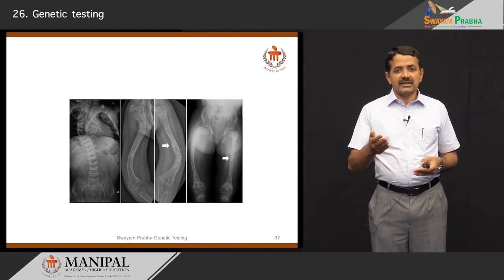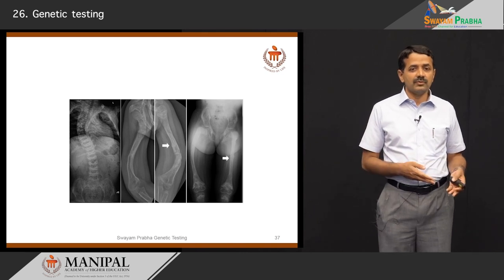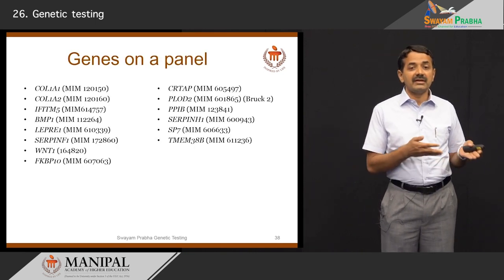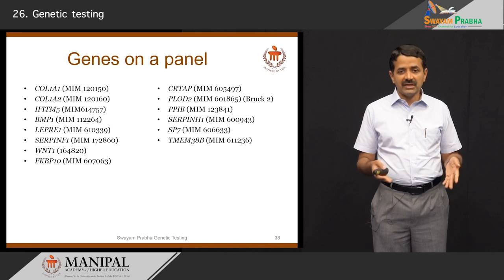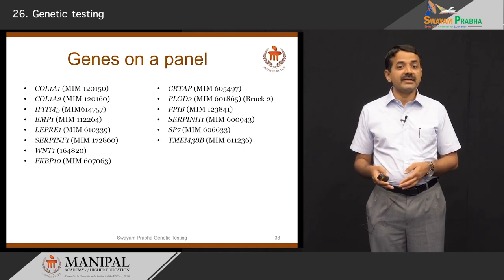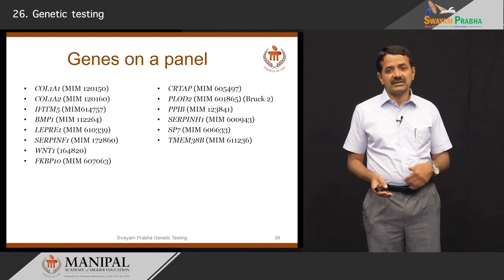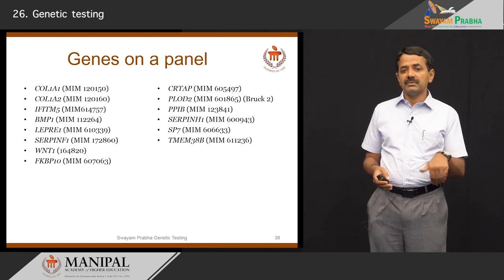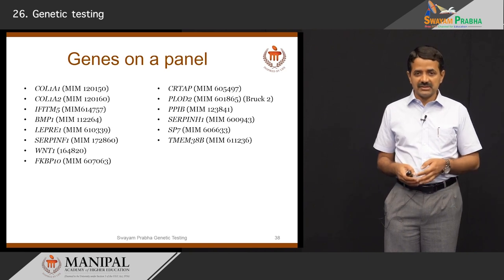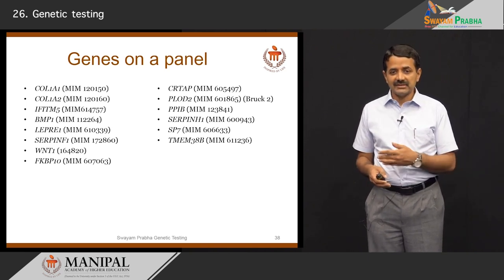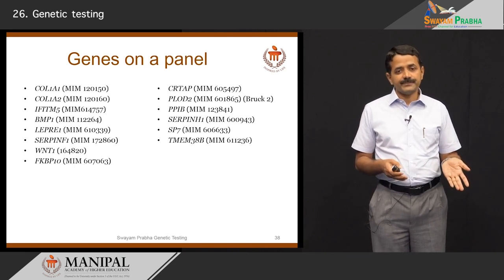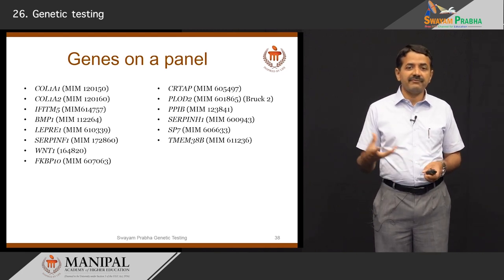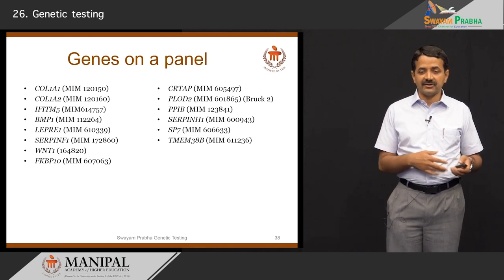For example, in osteogenesis imperfecta — characterized by several fractures and weak bones — at least 15 to 20 genes may need testing. Testing them one after another is tedious, time-consuming, and expensive. All can be put in a gene panel and analyzed by next-generation sequencing, or whole exome sequencing can be performed. Panel testing is currently recommended for genetically heterogeneous conditions where a finite number of genes are known to cause a particular disease, such as osteogenesis imperfecta.